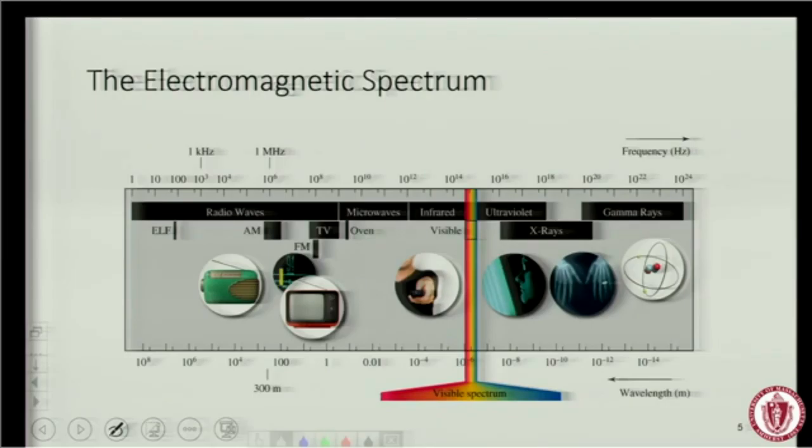Light includes everything from radio waves, microwaves, infrared waves, ultraviolet rays, and on to, in this direction, x-rays and gamma rays. Okay? So here the wavelengths are small, but the frequency is high. Here the wavelengths are large, but the frequency is low.